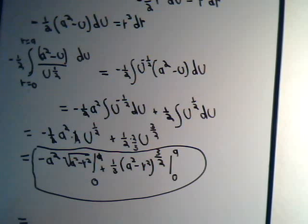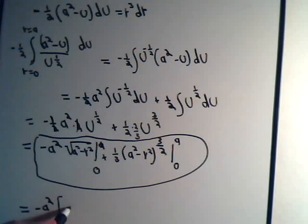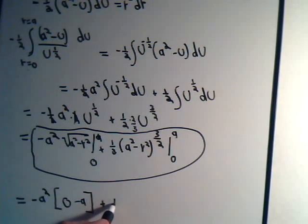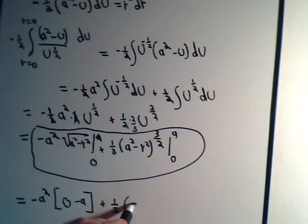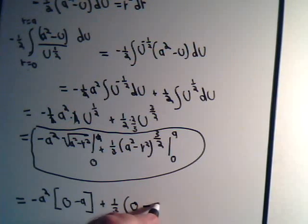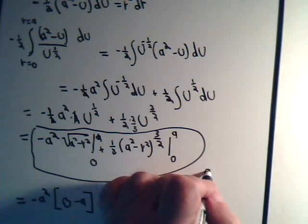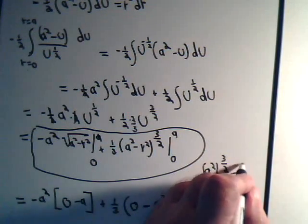So what do we have here? This will be equal to minus a² times, if r equals a I'm going to have a² minus a² so that would be zero, and if r is zero that's the square root of a² so that's just minus a. And then from here we'll have plus one third times, if r equals a I've got a² minus a² that's zero, minus a² to the three halves power that would be a³. A² raised to the three halves power, that's a³.